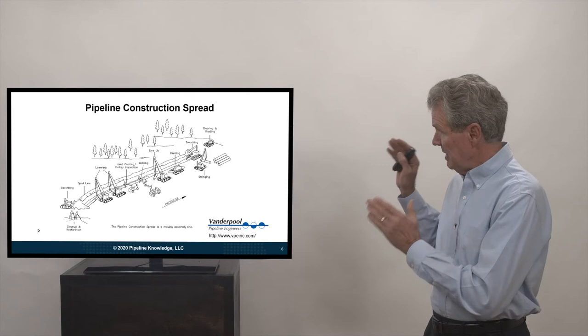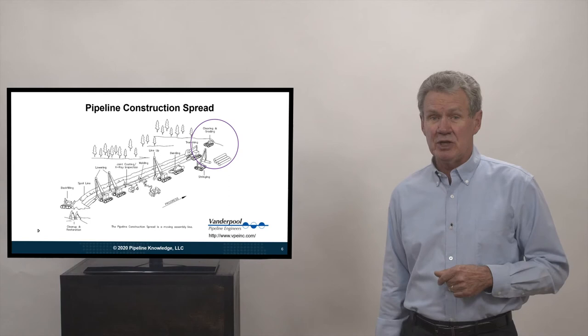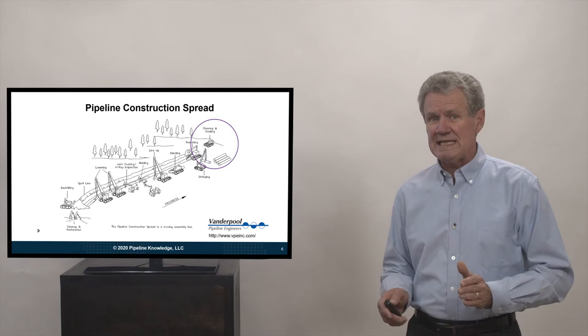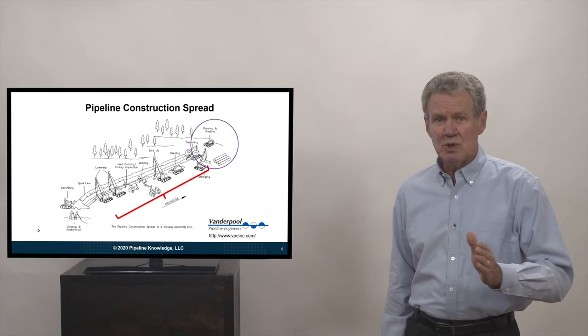So a pipeline construction spread. We start out at the beginning up here with the clearing crew. They are going through and clearing the right-of-way, building temporary roads, building temporary culverts, getting the right-of-way ready. So when this next crew, this main crew comes through, they can move through unimpeded.